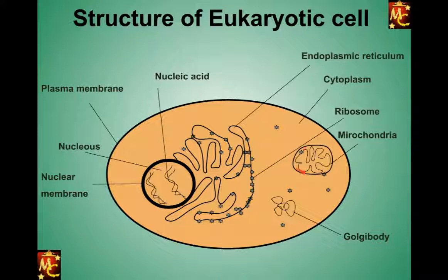Another important structure is the mitochondria. Mitochondria is a very well-known structure — we call it the powerhouse of the cell. Nutrients are broken down here, and ATP is stored inside the mitochondria. This stored ATP acts as energy for the cell. Mitochondria also has several finger-like protrusions.